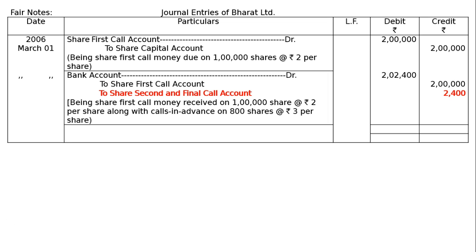Here, one major mistake was made — 'share second and final call' should not be written. The name has to be changed because the question says to pass entries using the calls in advance account. Please write in red ink: change 'share second and final call' to 'calls in advance account', Rs. 2400. Then total it and finish. The totalling is Rs. 2,02,400 for both the debit and credit columns. This is the final answer.